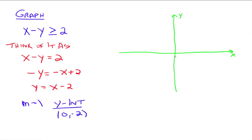Plot the Y-intercept at (0, negative 2). Since the slope is 1, that's 1 over 1 — up 1 and to the right 1. You keep going: up 1, over 1, and so on to get more points. Connect the dots and there's the graph of our line.